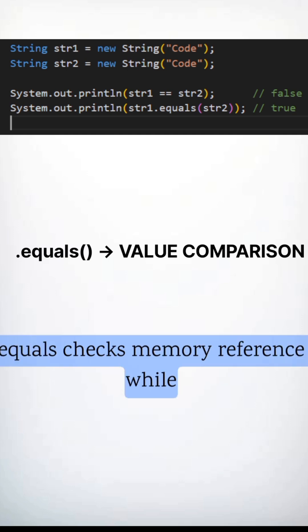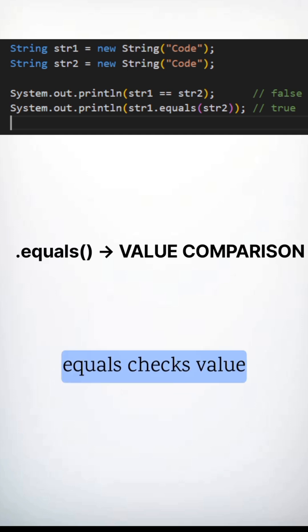In short, equals equals checks memory reference, while dot equals checks value equality.